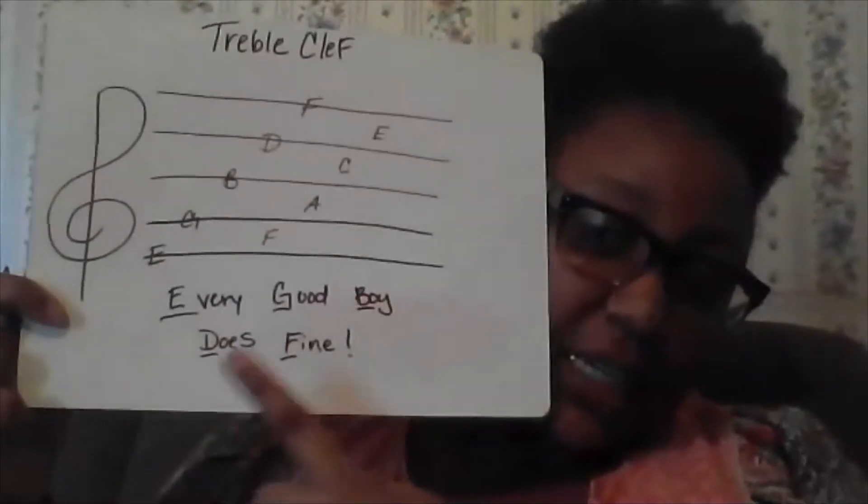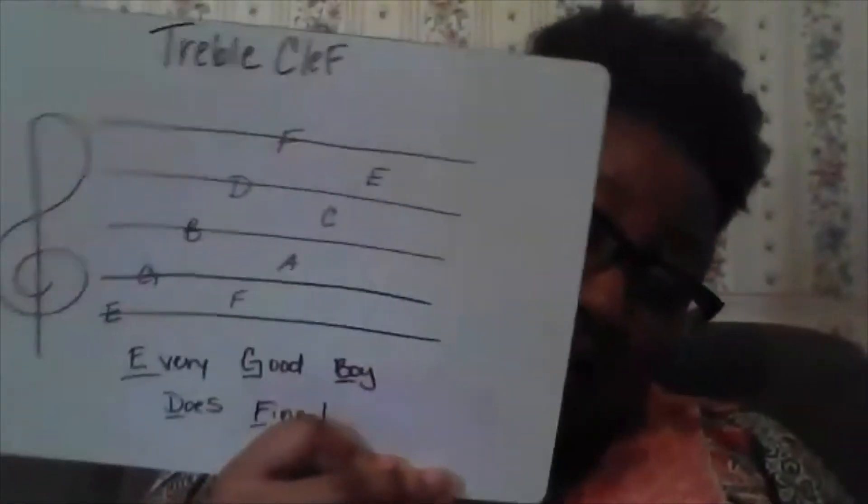The treble clef looks like a line and then a squiggly symbol. Then you have line one, two, three, four, and five. So it's five lines and four spaces. I've written in all of the letters for the lines and the spaces.